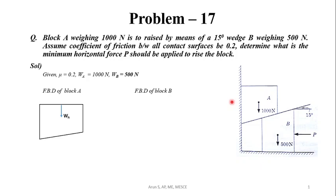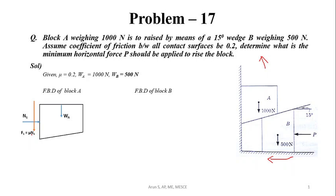On the vertical surface, block A has a normal reaction N1, perpendicular to the contact surface. As we apply force P, wedge B moves to the left, which causes block A to move in the upward direction. Since block A moves upward relative to the vertical surface, the friction force F1 will be acting in the downward direction, where F1 equals mu times N1.